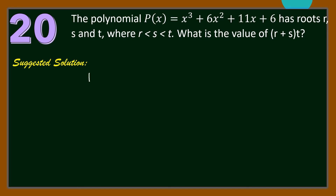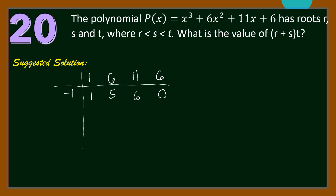We have coefficients 1, 6, 11, and 6. By the Rational Root Theorem, possible roots include ±1, ±2, ±3, and ±6. Let us begin with −1. Bring down 1; 1 × (−1) = −1, plus 6 = 5; 5 × (−1) = −5, plus 11 = 6; 6 × (−1) = −6, plus 6 = 0. Hence, −1 is a root of the given polynomial, and the reduced equation is x² + 5x + 6 = 0.